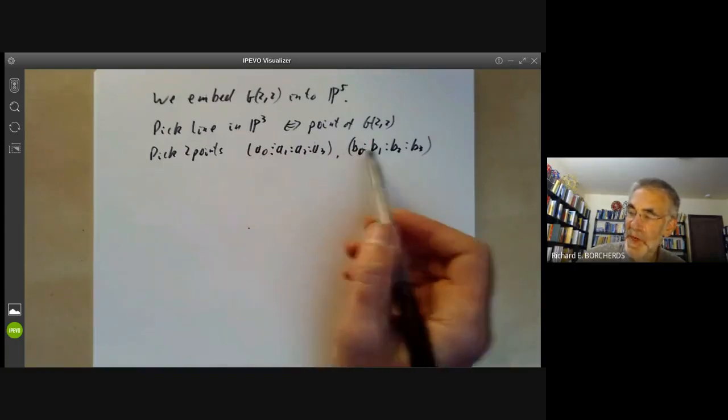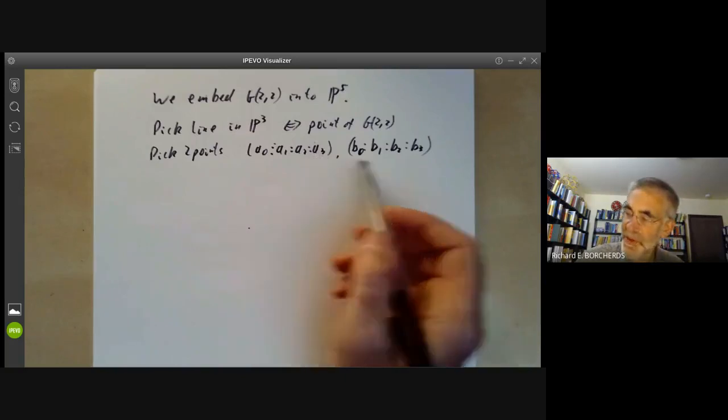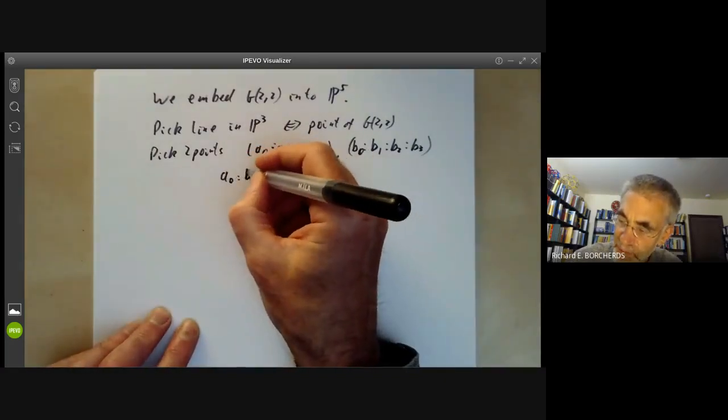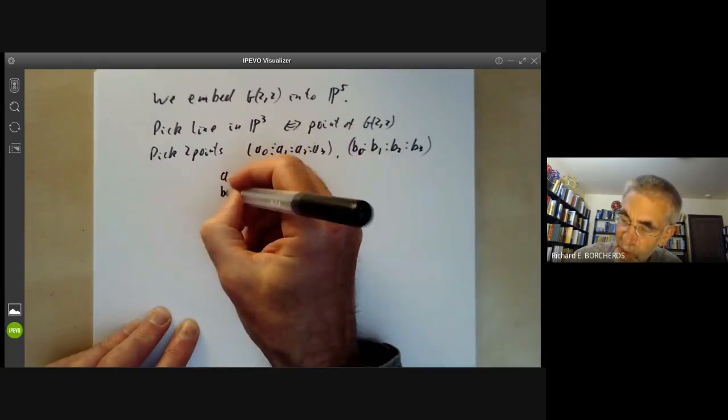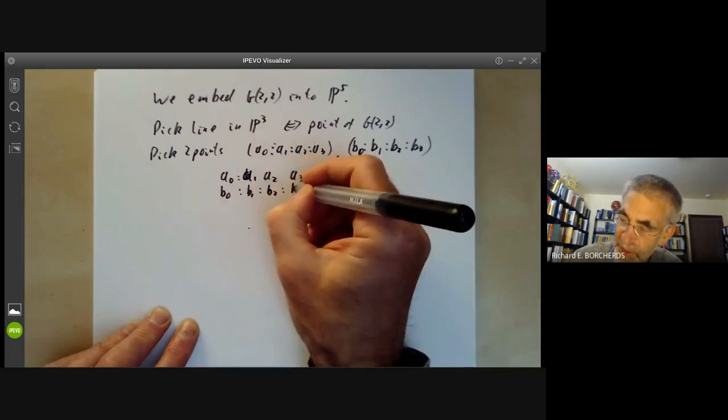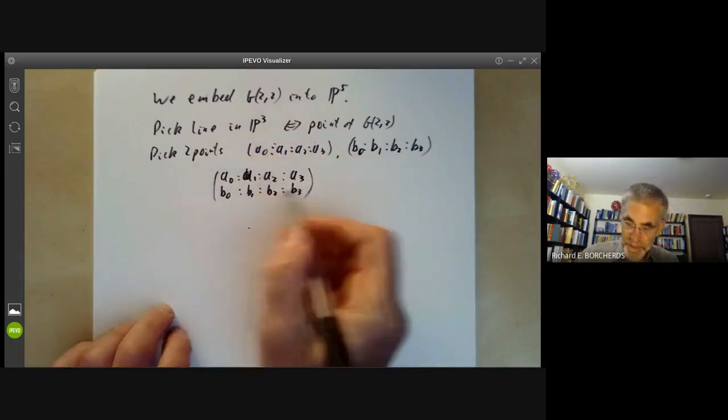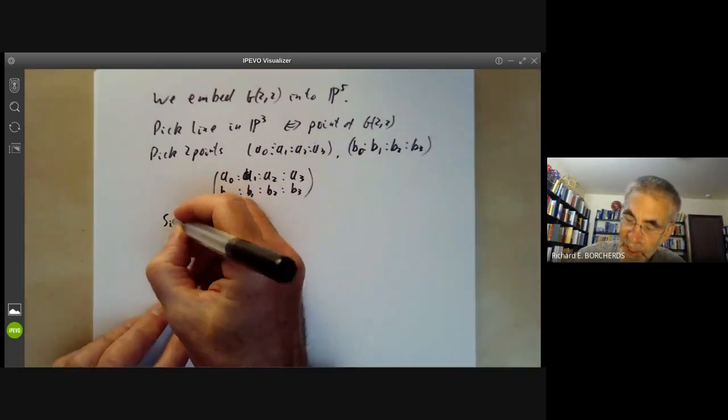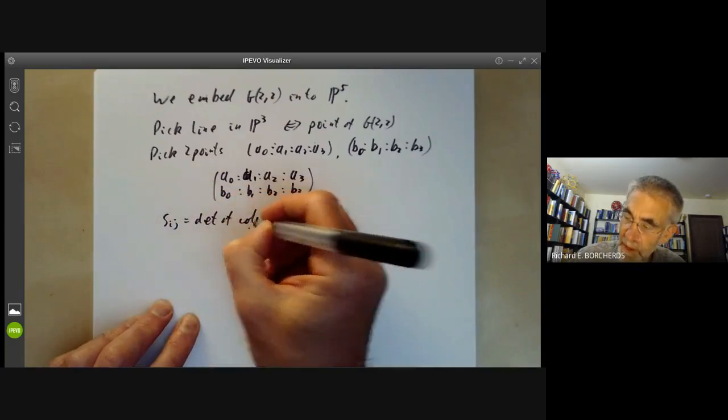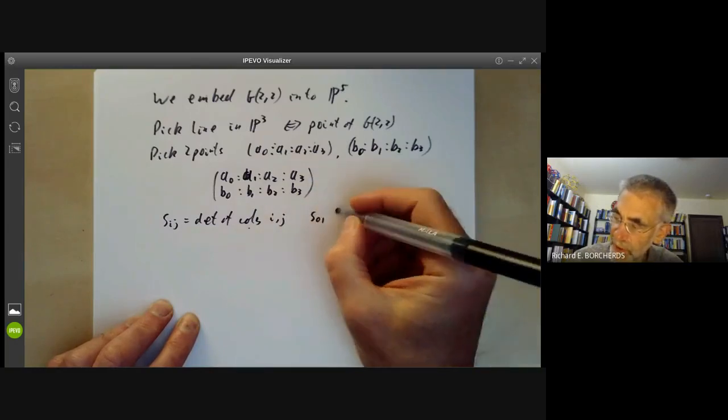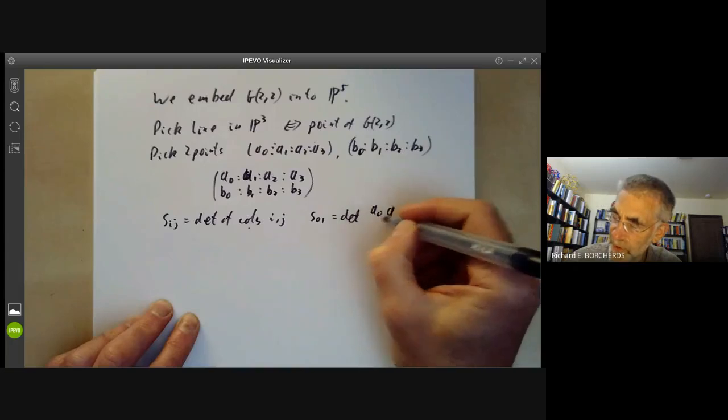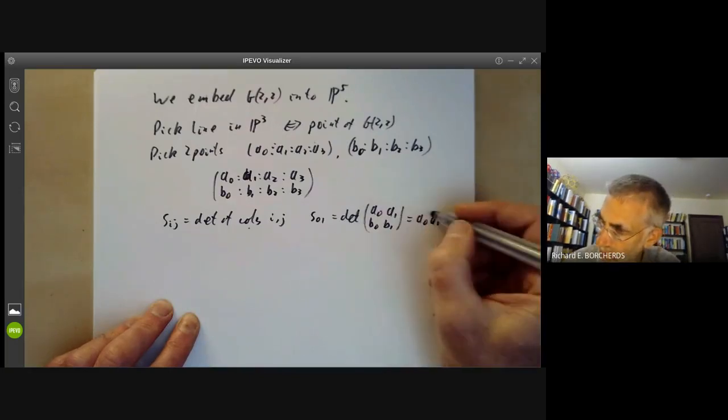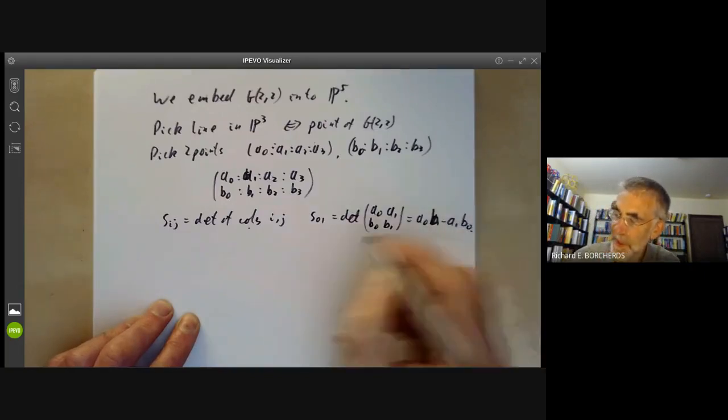These are only defined up to multiplication by scalars and from these we want to somehow produce a point in P5. So we need to give six numbers. And what I'm going to do is I'm going to put these two things together A0, A1, A2, A3, B0, B1, B2, B3. And here I get a little two-by-four matrix. And now I'm going to put SI,J to be the determinant of columns I, J. So for instance S0,1 is the determinant of A0, A1, B0, B1 which is A0·B1 minus A1·B0. And similarly for the others.